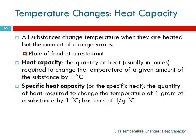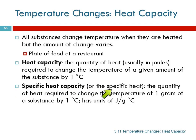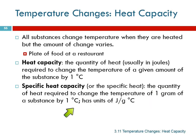Heat capacity is the quantity of heat — usually measured in joules — that's needed to change the temperature of a particular amount of substance by one degree Celsius. We usually use the specific heat capacity, sometimes just called specific heat. That's the amount of heat needed to change the temperature of one gram of the substance by one degree Celsius.